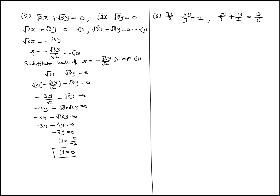Therefore y equal to 0 upon minus 7, so y equal to 0. We have found the value of y by the substitution method. Now put the value of y equal to 0 in equation number 3: x equal to minus root 3 into 0 upon root 2, which gives x equal to minus 0 upon root 2.